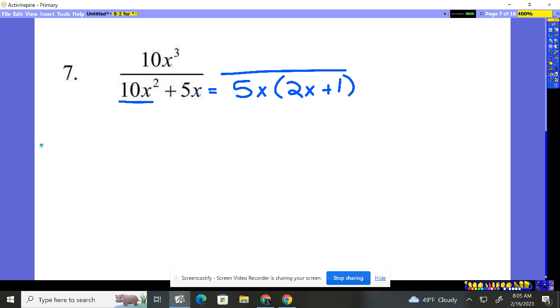So the bottom we need to factor out and we get 5x times the quantity 2x plus 1 all over 10x cubed. Okay, now we can do something here.